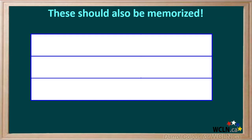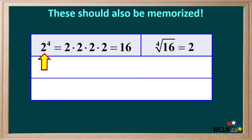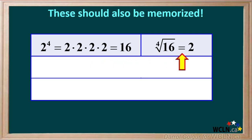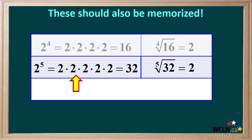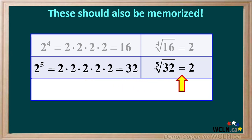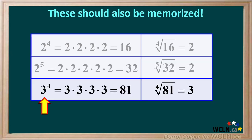There are a few other exponents and roots that you should memorize. 2 to the power of 4 is 2 times 2 times 2 times 2, which is equal to 16. We can also say the fourth root of 16 is equal to 2. 2 to the power of 5 is 2 times 2 times 2 times 2 times 2, which is equal to 32, and the fifth root of 32 is 2. 3 to the power of 4 is 3 times 3 times 3 times 3, or 9 times 9, which is equal to 81, and the fourth root of 81 is 3.